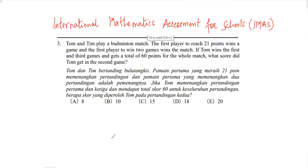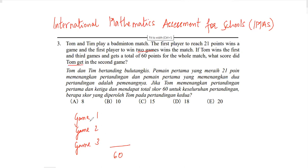Question 3: Tom and Tim play a badminton match. The first player to reach 21 points wins a game, and the first to win two games wins the match. Tom wins the first and third games and gets a total of 60 points for the whole match. What score did Tom get in the second game? Since he won games one and three, that's 21 plus 21 equals 42 points. So 60 minus 42 equals 18. Tom scored 18 points in the second game. My answer is option B.